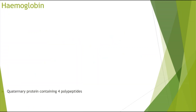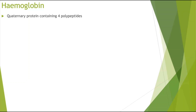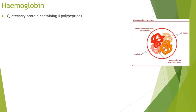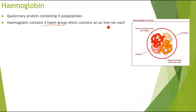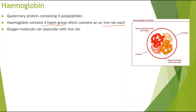First, looking at the structure of hemoglobin itself. Hemoglobin is a quaternary protein — it has more than one polypeptide, specifically four polypeptides. Hemoglobin also contains four heme groups, each containing an Fe2+ iron ion. Each of the four polypeptides contains a heme group with an iron ion, and an oxygen molecule can associate with that iron ion. So hemoglobin is able to carry four oxygen molecules when it is fully saturated.